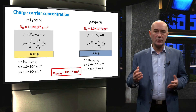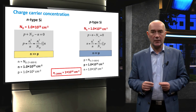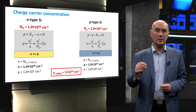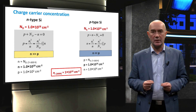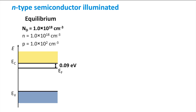We have looked at an intrinsic semiconductor under illumination. Let's now consider doped semiconductors. Here you see the carrier concentrations for N-type and P-type silicon as calculated in a previous video. We can use these results to determine the quasi-Fermi levels under the same illumination conditions. Starting with N-type silicon with a donor concentration of 10¹⁸ per cubic centimeter: at equilibrium, the electron concentration is 10¹⁸ per cubic centimeter, the hole concentration is 10² per cubic centimeter, and the Fermi level is 0.09 eV below the conduction band edge.